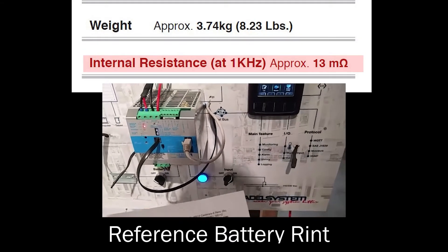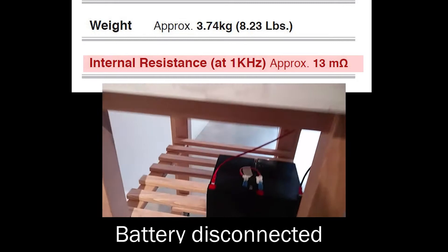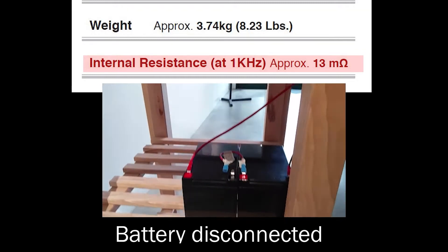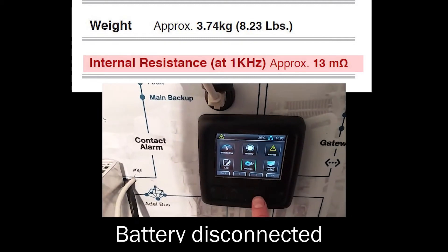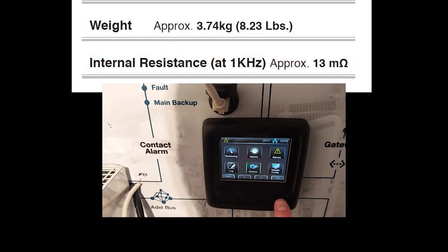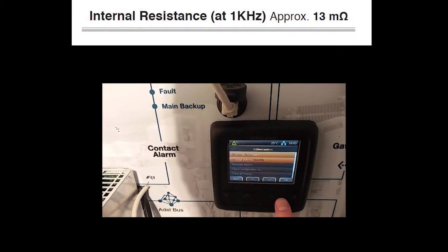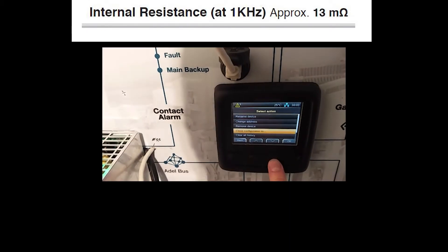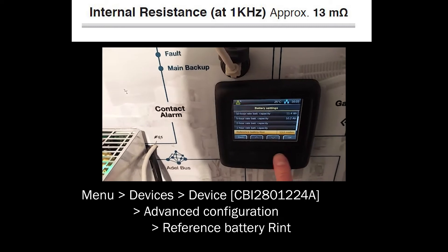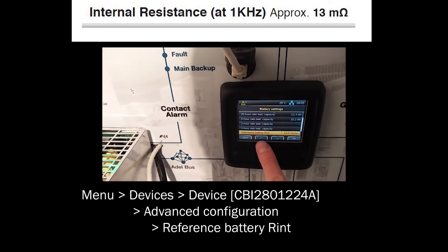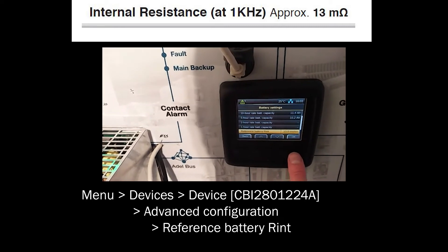With battery disconnected, you have to go to menu, devices, CPI, battery settings, reference battery RINT.